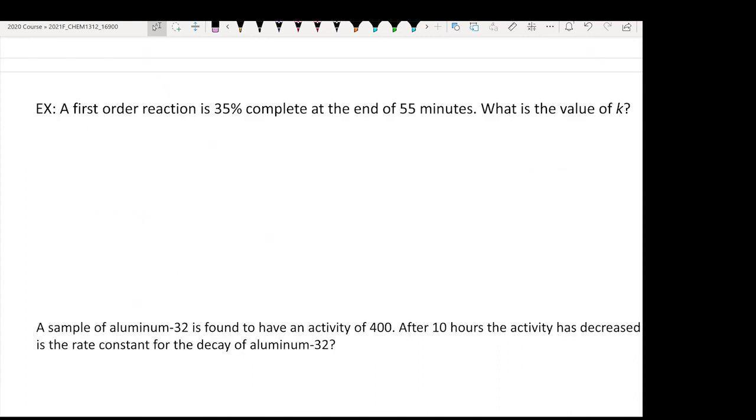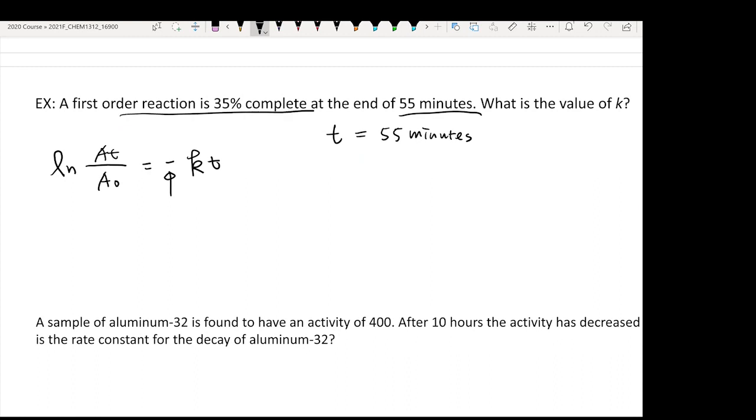The typical problems you're going to see: a first order reaction is 35% complete at the end of 55 minutes. What is the value of k? We are going to use natural log At over A0 equals negative kt. Don't forget the negative sign. The t is going to equal 55 minutes, and it says the reaction is 35% complete.